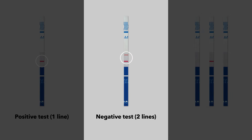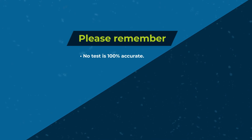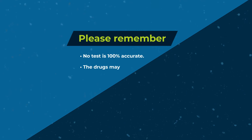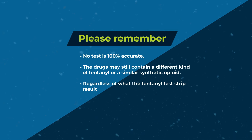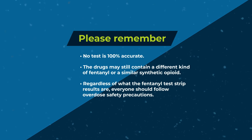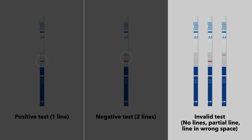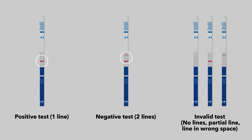A negative test means that fentanyl or one of the analogs the strips can detect has not been detected. Please remember, no test is 100% accurate — the drugs may still contain a different kind of fentanyl or a similar synthetic opioid. If you see an invalid test result, retest the drugs with a new fentanyl test strip, as there is no way of knowing if the drugs have fentanyl without retesting. Please note: the results for these test strips are the opposite of many common at-home tests, like a rapid COVID-19 test or pregnancy test.